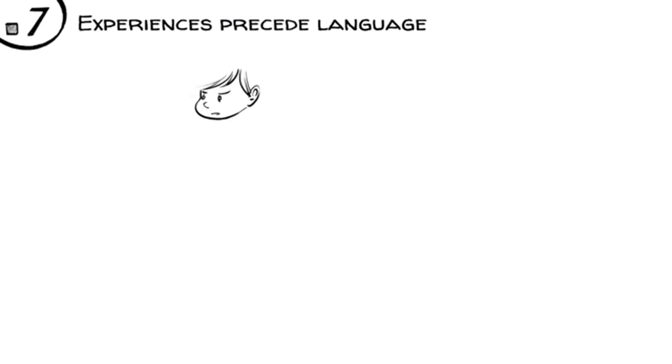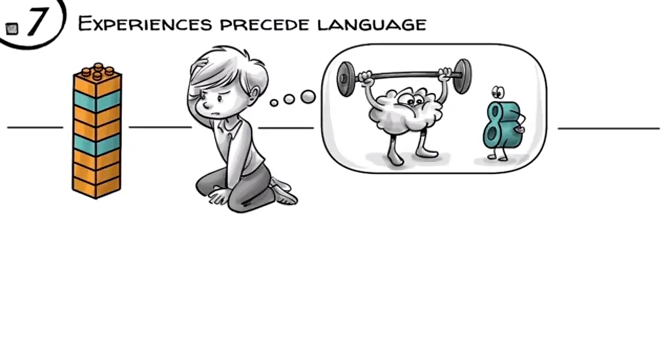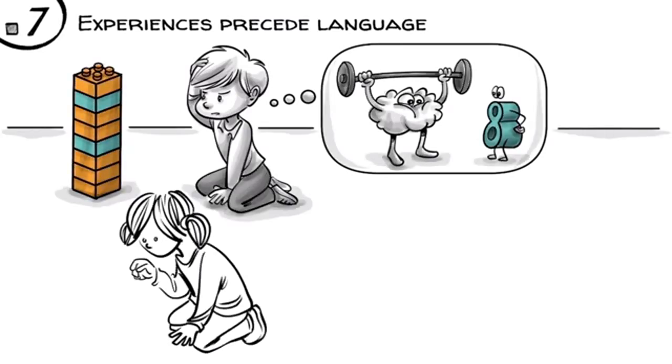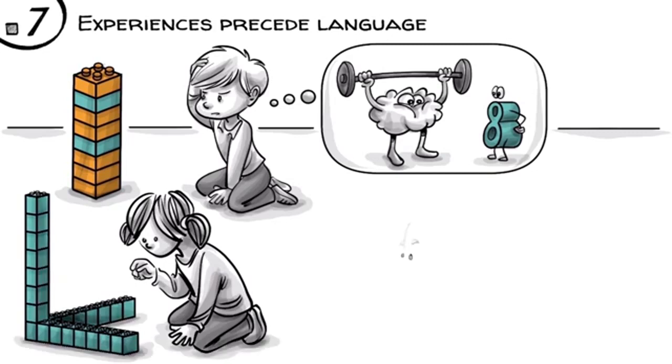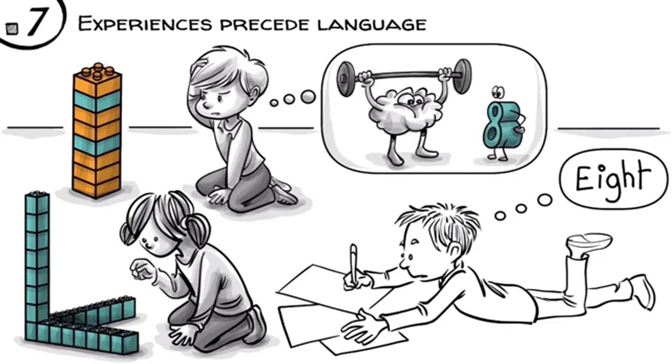Experiences precede language. As we demonstrated, it takes a child a lot of mental training and hands-on experiences to form the concept of a number. At the age of five, we can build a simple row of eight, later form eight-square then eight-root. Only once we have constructed number concepts inside our heads can we effectively learn how to express them with images, symbols and language.